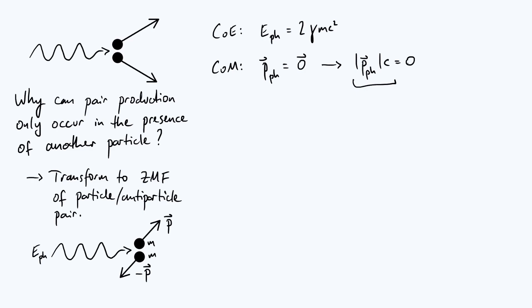So if this equation is true, if magnitude of p_ph times c is zero, that implies that the energy of the photon would also have to be zero.